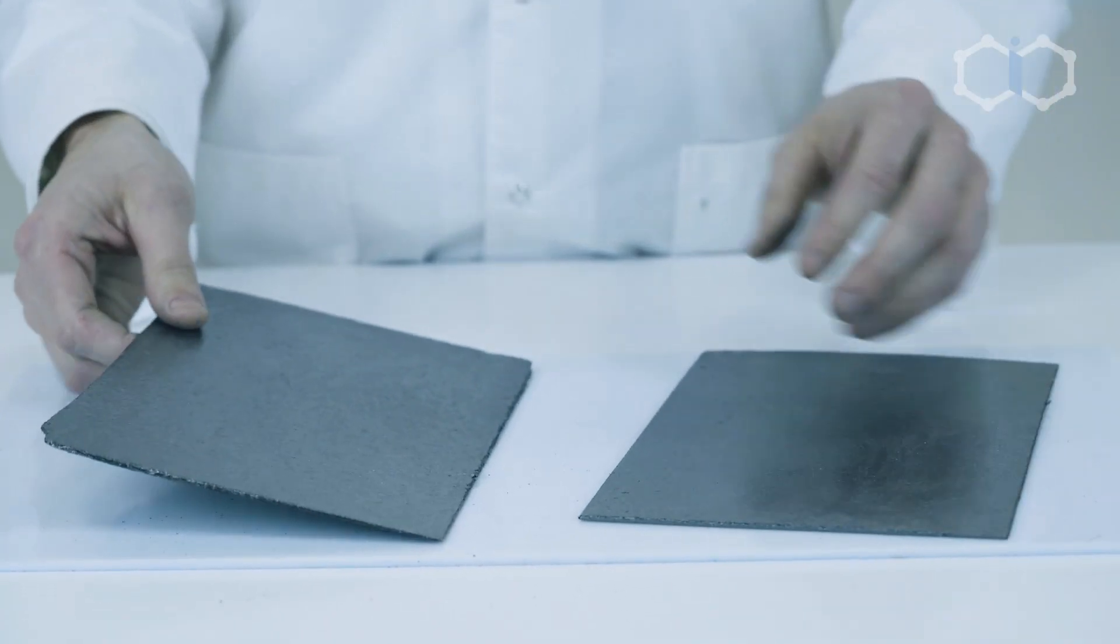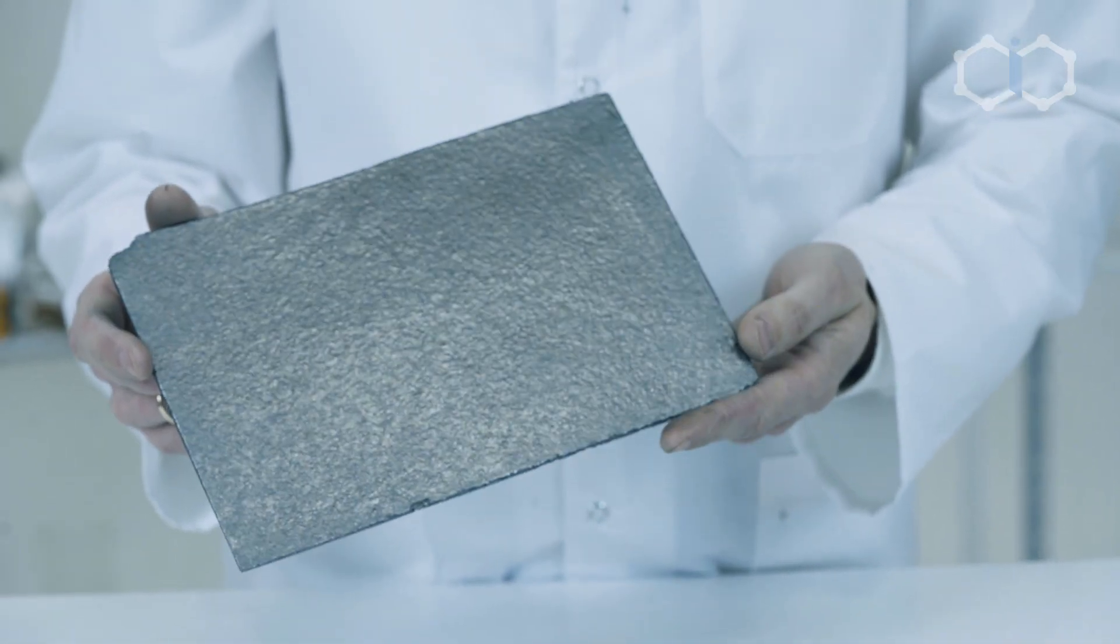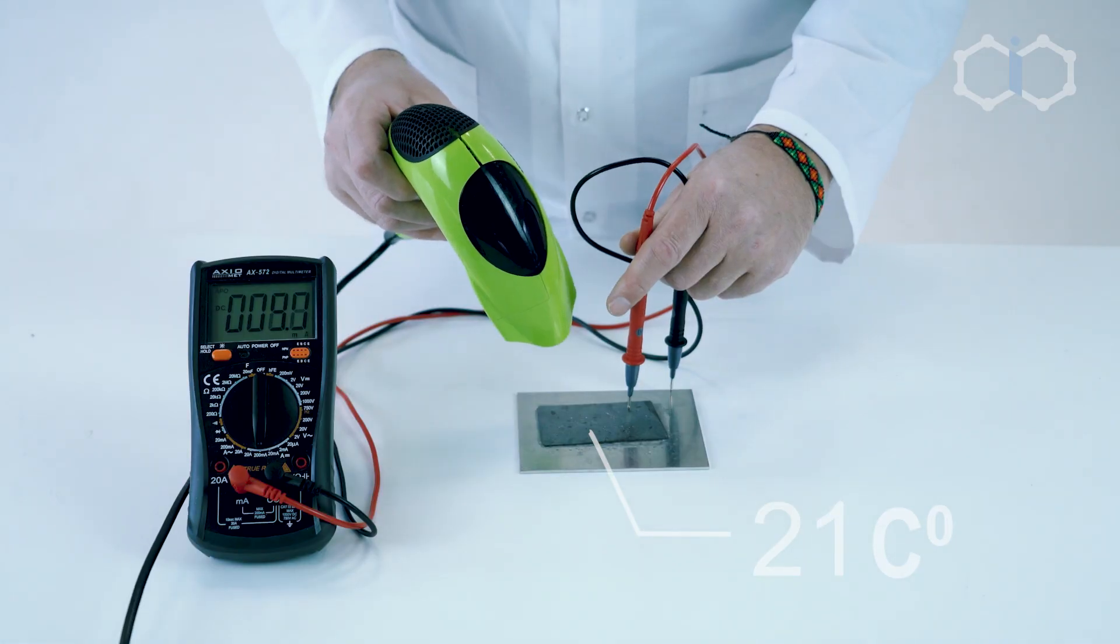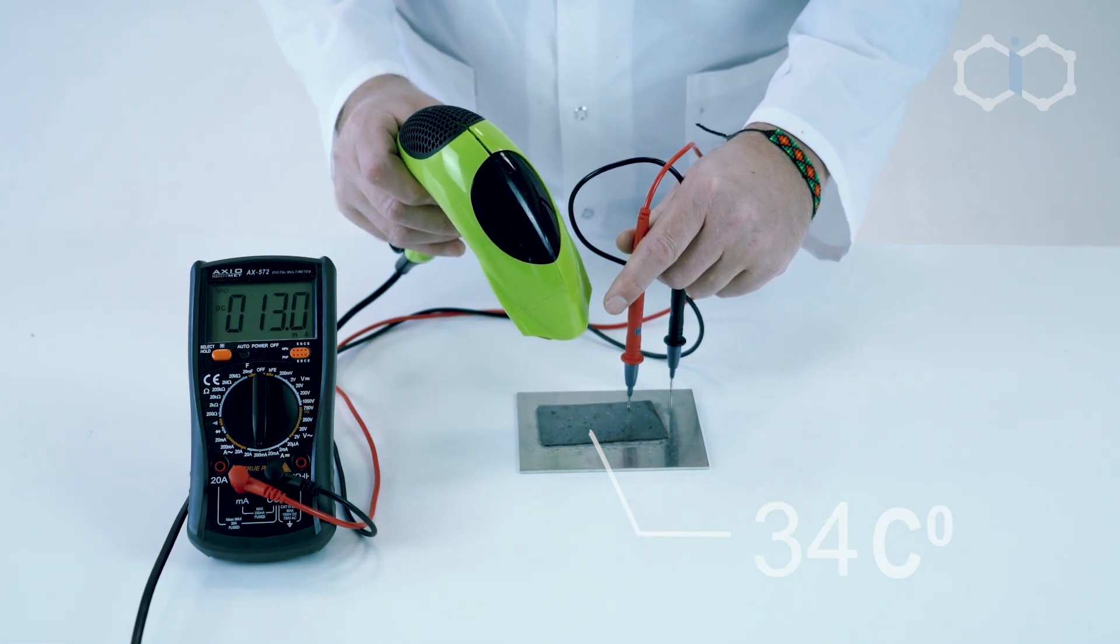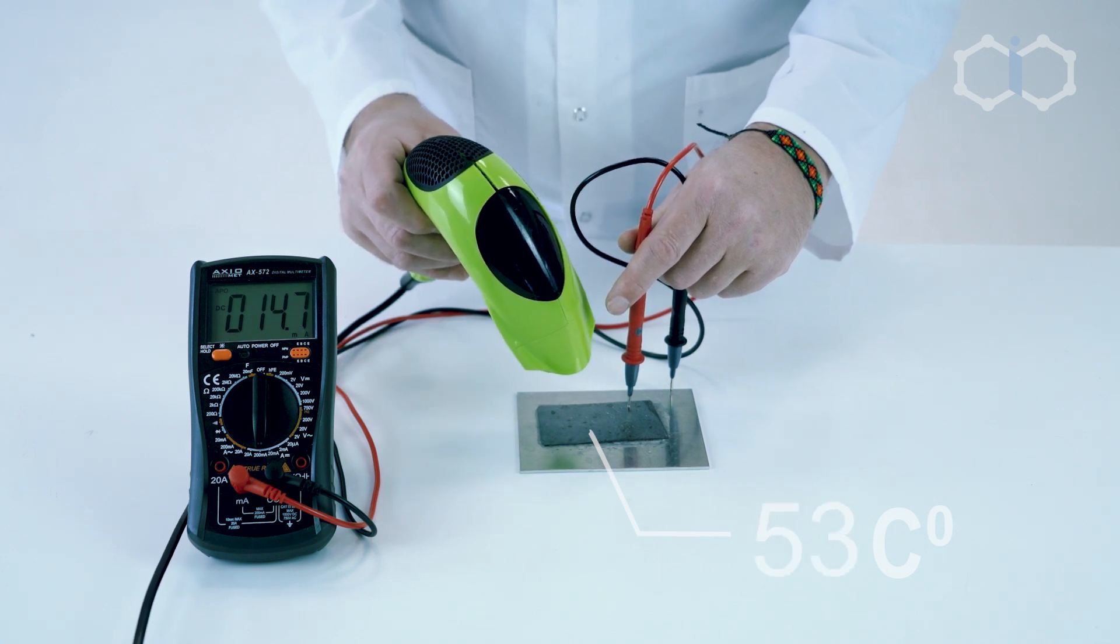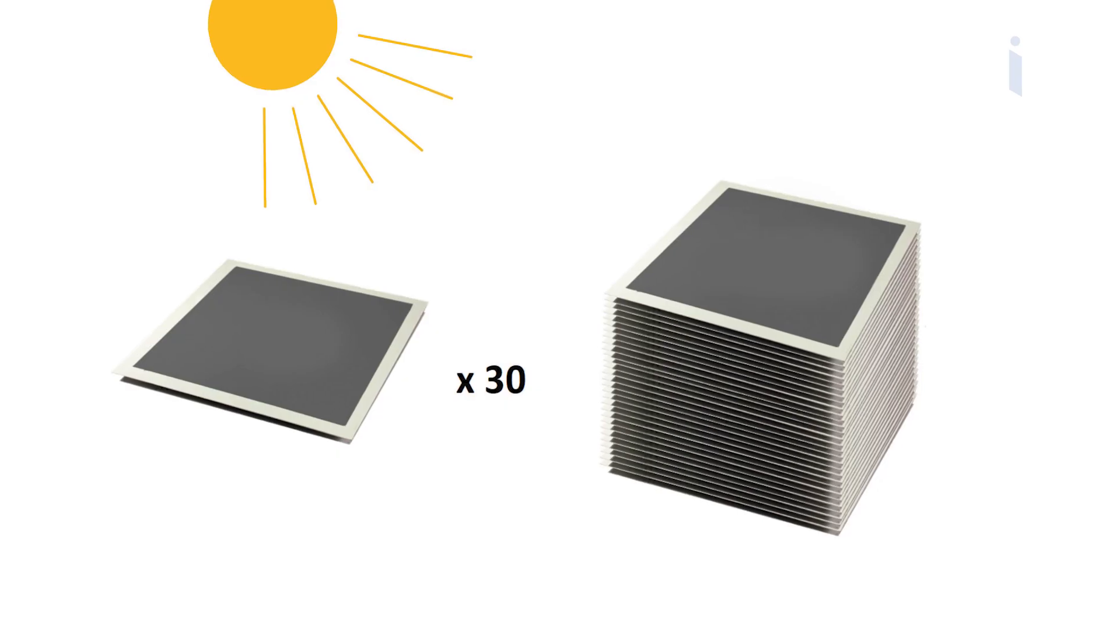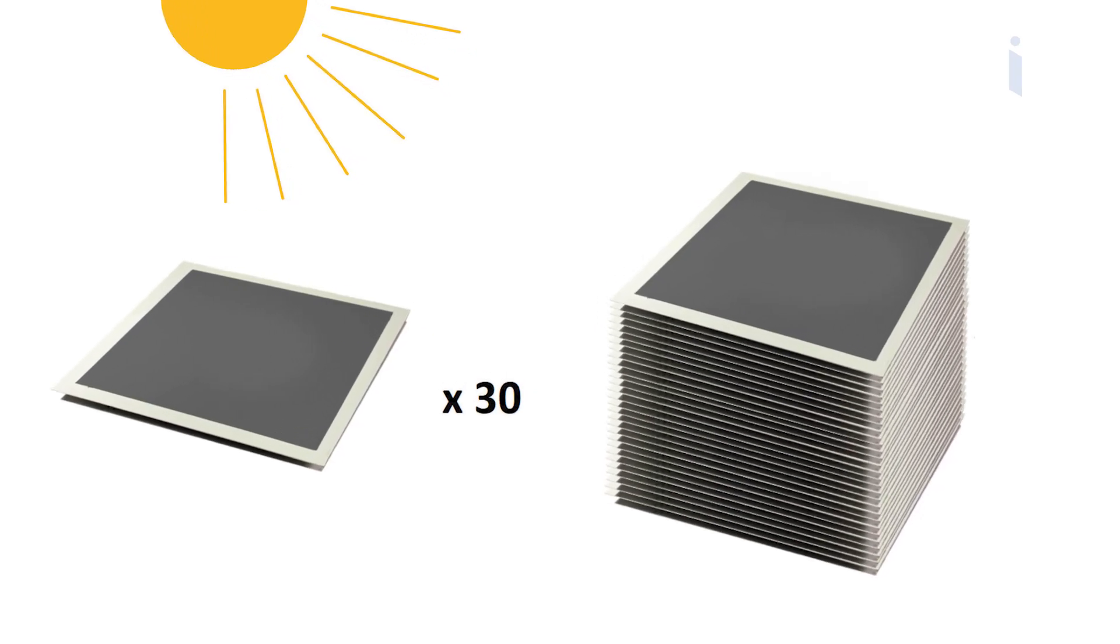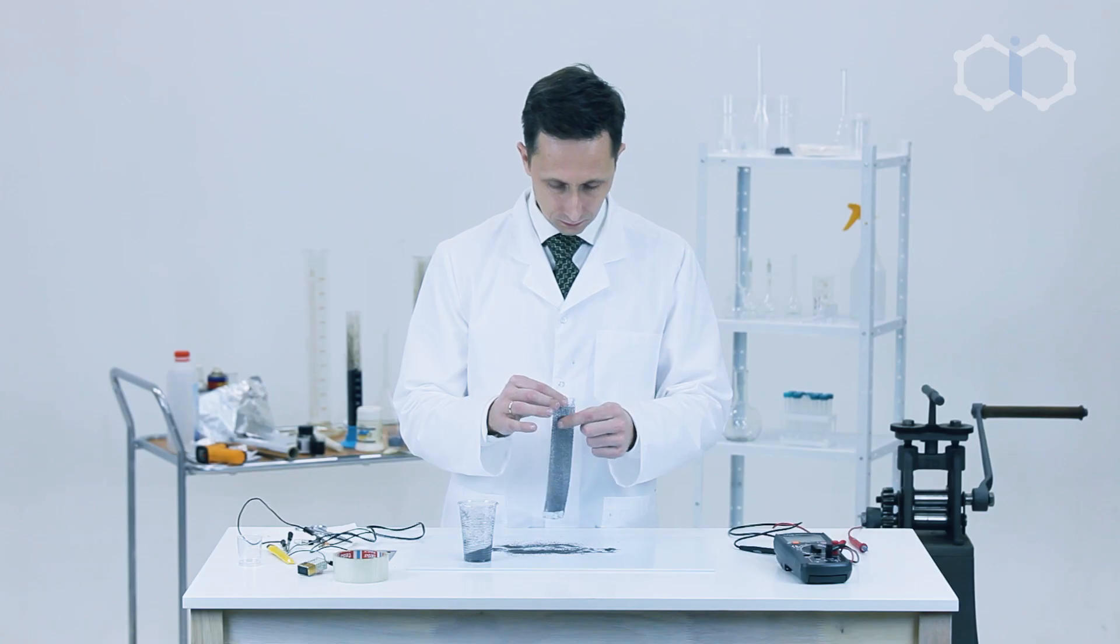You can also use this material in electrical engineering to create supercapacitors, batteries, and thermoelectric generators. Now our employee is demonstrating a thermoelectric generator developed by our company. This generator is based on a compressed powder of expanded graphite. In this device, thermal energy is directly converted into electrical energy. It is also possible to produce foil from expanded graphite by rolling.